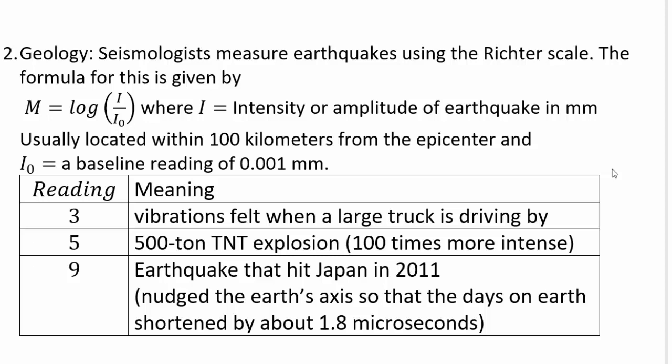The earthquake that hit Japan in 2011 was 9 on the Richter scale, which is incredibly powerful — it's 10 to the 9th. It was so powerful that it actually knocked the earth's axis, shortening days on earth by 1.8 microseconds.